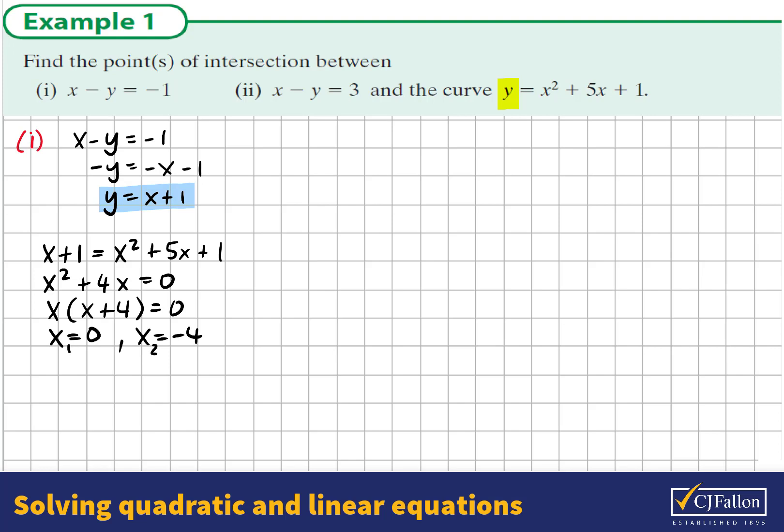Now those are the x solutions. We have corresponding y solutions, so we substitute these values back into y equals x plus 1. We have 0 plus 1 is 1, and the other one is negative 4 plus 1, giving us negative 3.